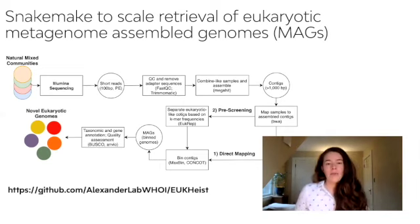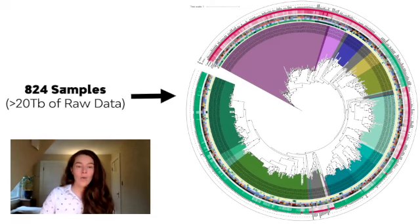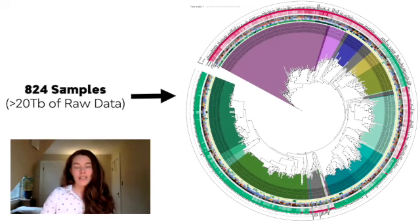Ultimately, some of these problems necessitated new collaborations and the creation of new software pipelines and tools. However, at the end of the project, we were left with a wonderful repertoire of high-quality eukaryotic genomes, or MAGs, that are shedding light on the ecology and biogeography of a whole host of novel eukaryotic lineages.